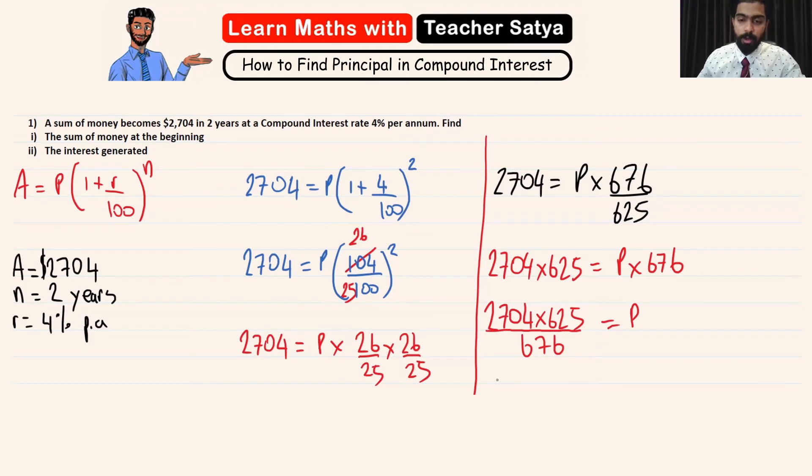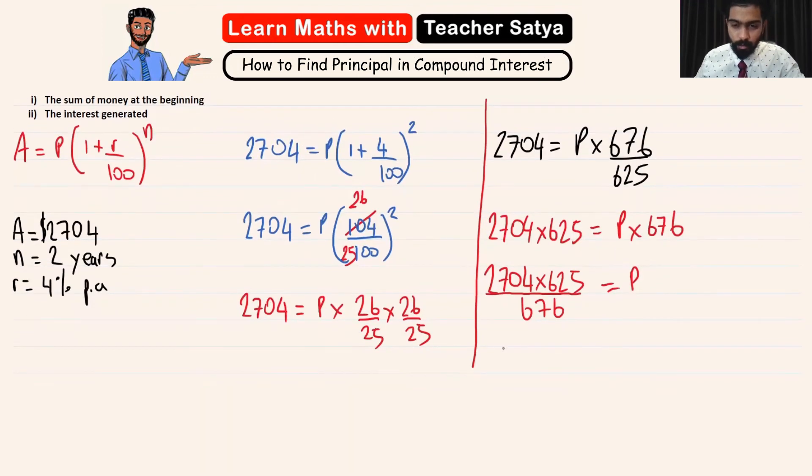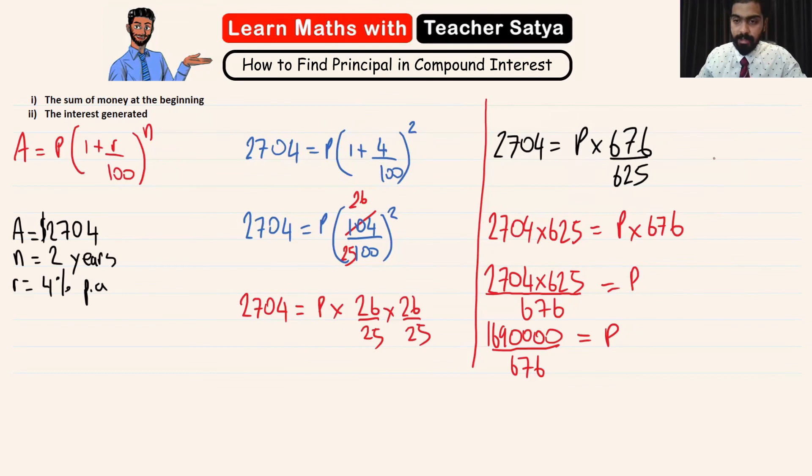Let's see what we have. 2704 × 625 gives us 1,690,000 ÷ 676 = P. Now if I take that and divide by 676, I get the value of P. So the value of P is equal to $2500, and that is how we would find the sum of money or the principal when we are given the amount, the rate, and the time.